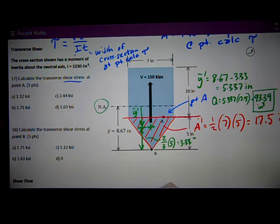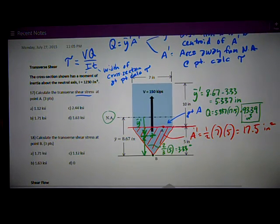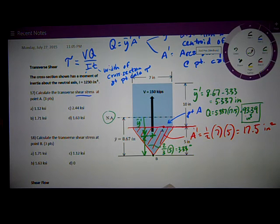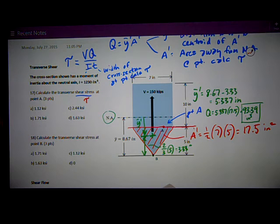Now I've almost got it. I say tau is equal to VQ over IT. So tau is equal to VQ over IT.